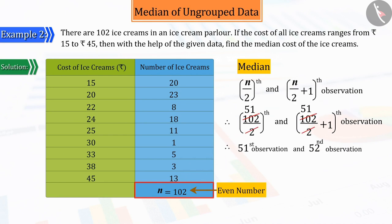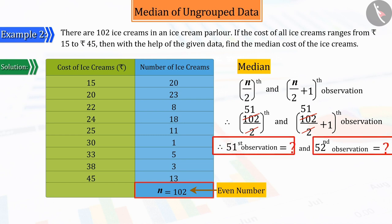From which we can tell that the median will be the average of the 51st and 52nd observations. But here, we do not know the value of both these observations. So, can you tell what we need to do to know the values of these observations?